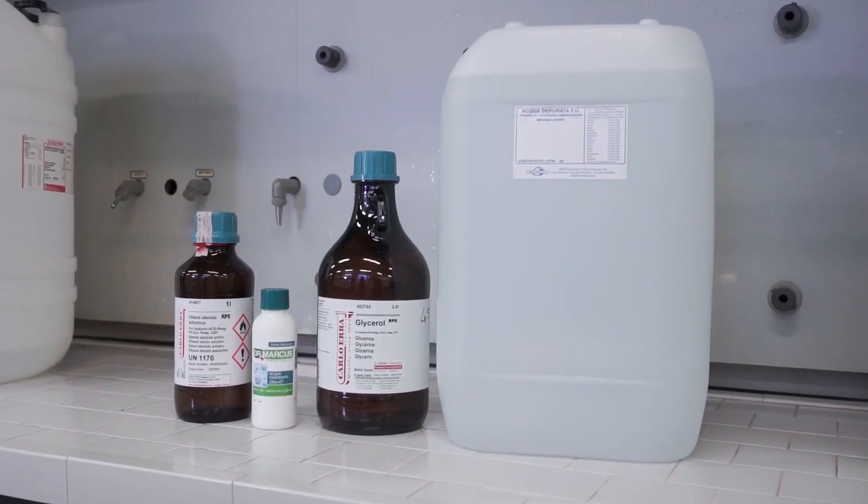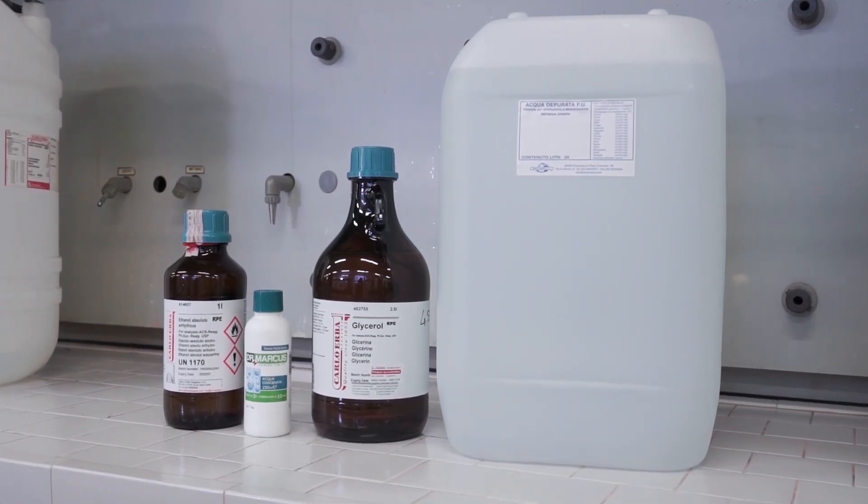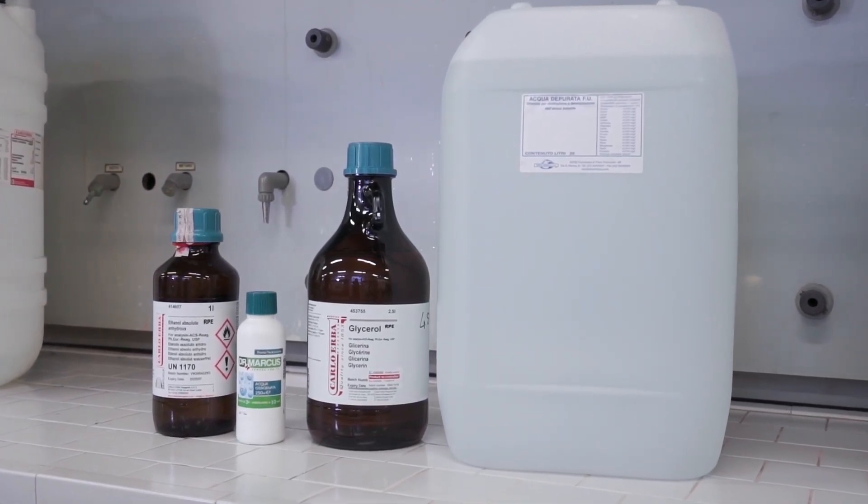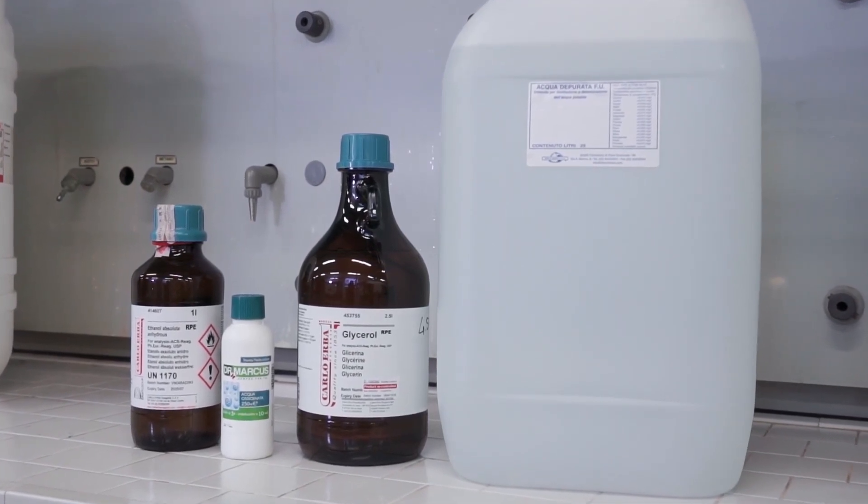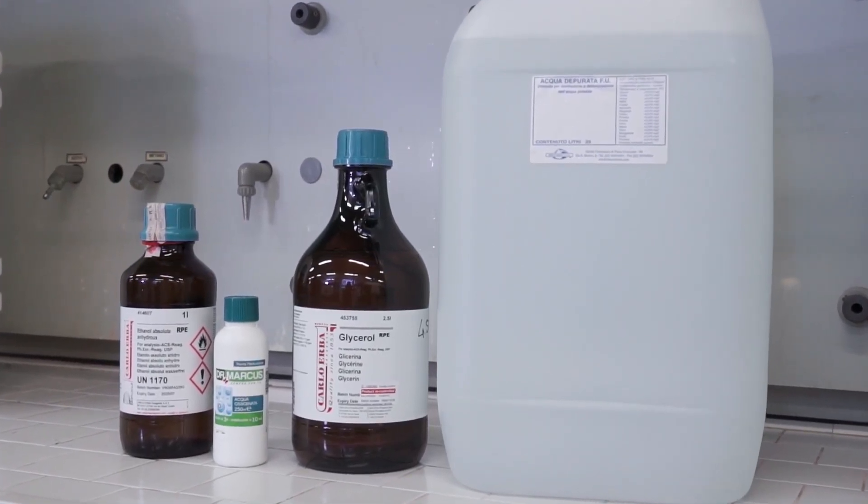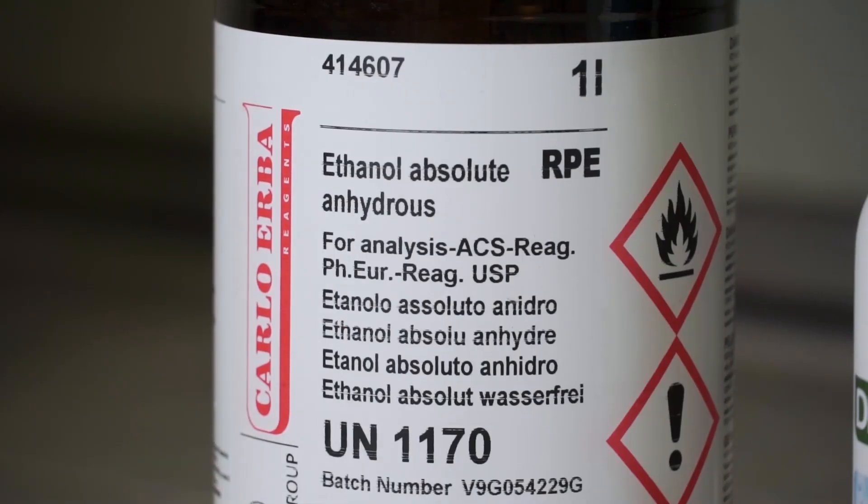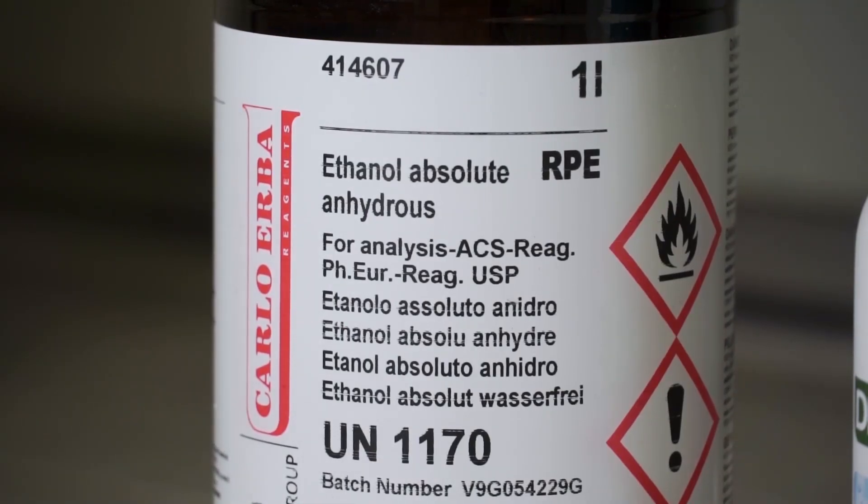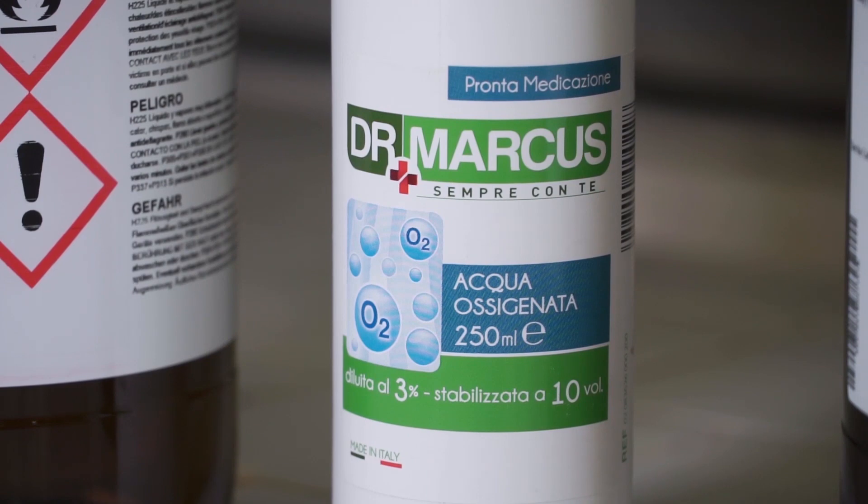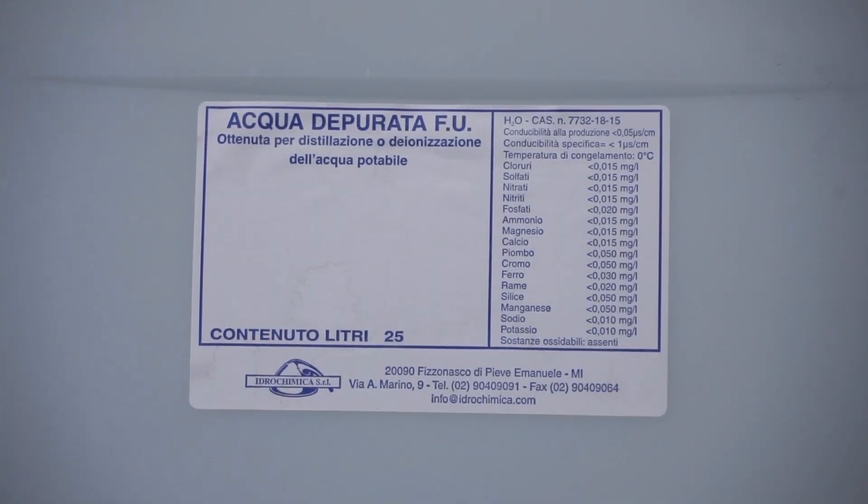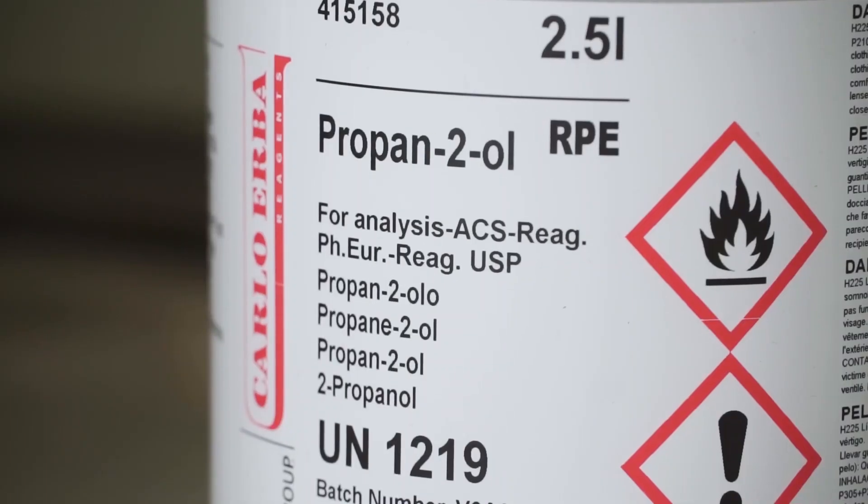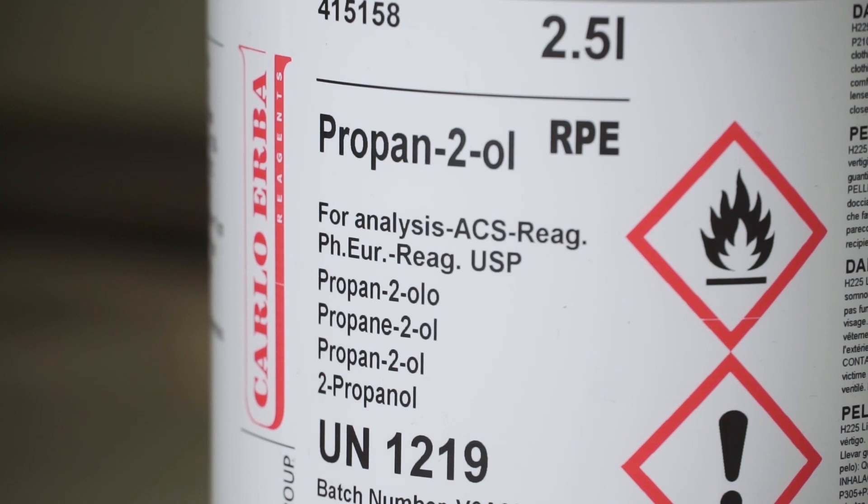The WHO has published two different hand disinfectant formulations, both listed in the attached document. The first formulation uses the following components: ethanol at 96% volume per volume, hydrogen peroxide, glycerol and purified water. On the other hand, the second formulation substitutes ethanol with 99.8% volume per volume isopropyl alcohol.